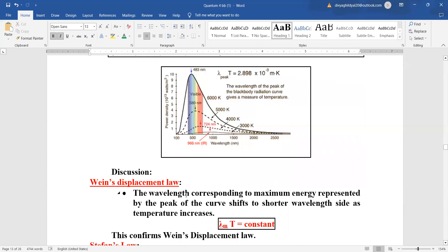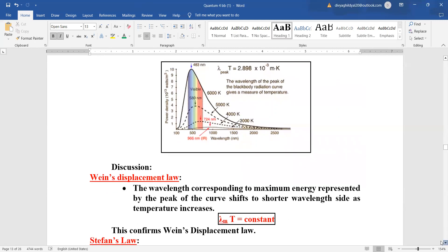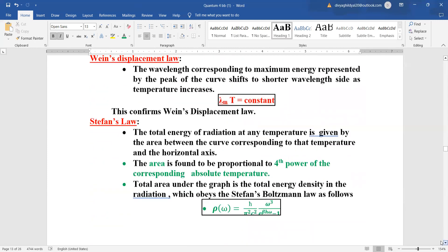Now the Wayne's displacement law discussion they are asking us to discuss. So the wavelength corresponding to maximum energy represented by peak of curve shifts to shorter wavelength side as the temperature is increasing. That is lambda m into t is a constant. So this is confirmed from the spectra. Stephen's law.